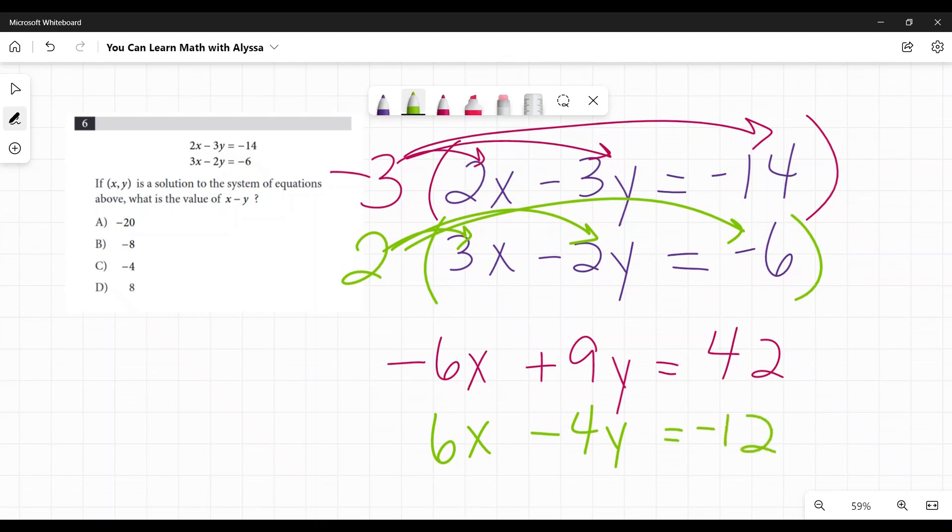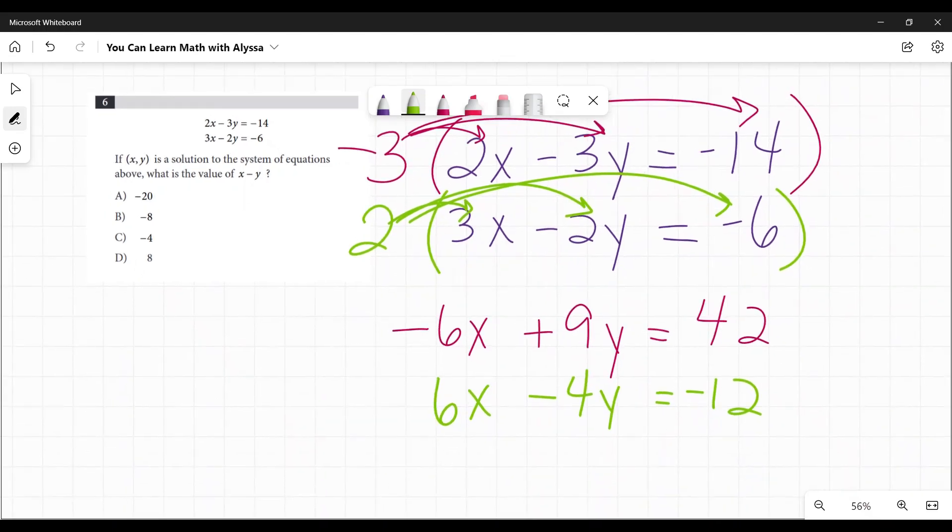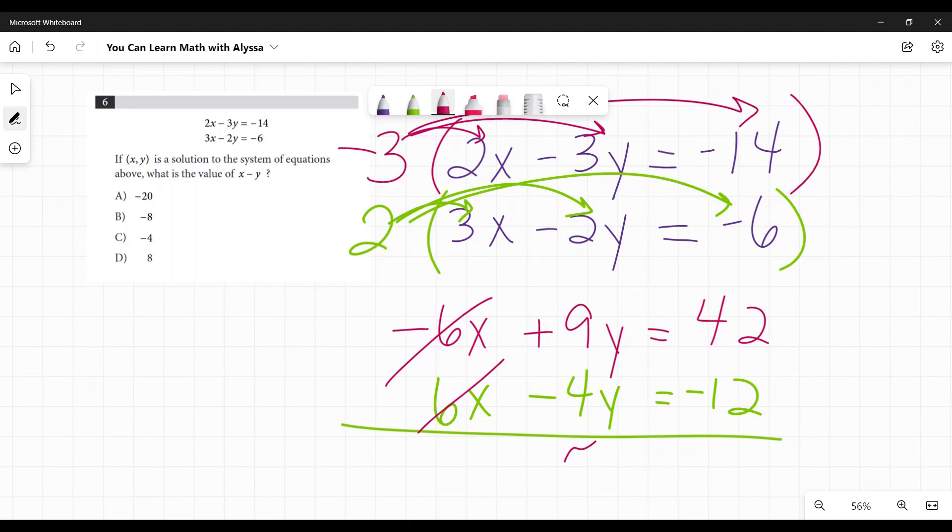Be super careful with these positives and negatives. You do not want to get this wrong because of a careless error. Those are the ones where you just want to kick yourself because you're like, oh, I knew how to do this. We don't want that to happen. So now I need to add these together. Again, as I planned, the x's cancel out. 9y plus a negative 4y is 5y. And 42 plus negative 12 is a positive 30. Since 5 times y equals 30, I'm going to divide both sides by 5 to discover that y is equal to 6.